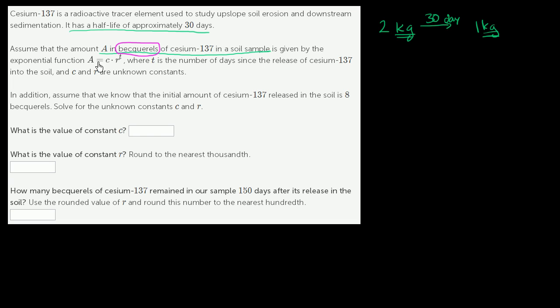Just to be clear, the amount is given by the exponential function A is equal to C times R to the T power, where T is the number of days since the release of the cesium-137 in the soil, and C and R are unknown constants. This is days, days since release.